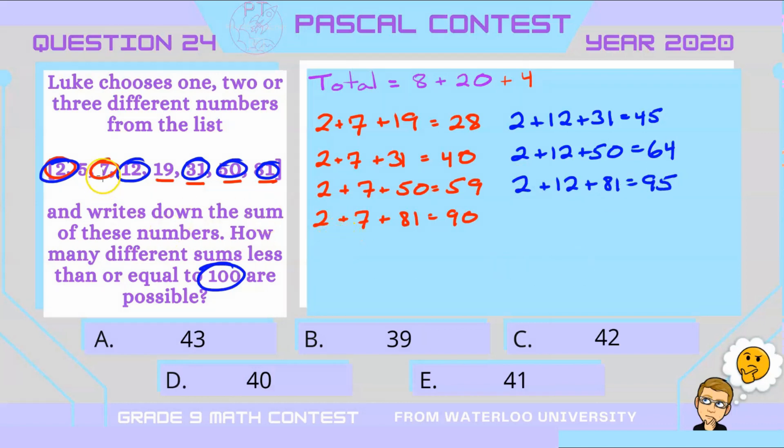And continuing, we can do two, 19, and 50. And we wouldn't be able to do two, 19, and 81 because that's exceeding our 100 limit here. All right, so let's move over and look at five.